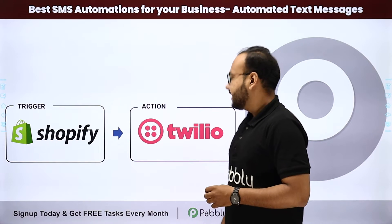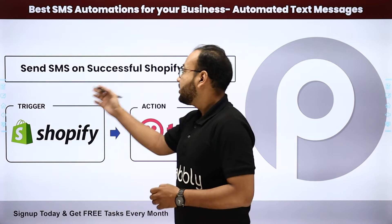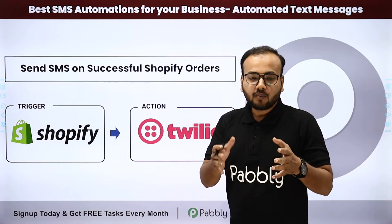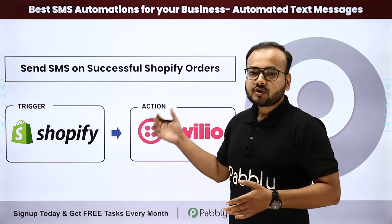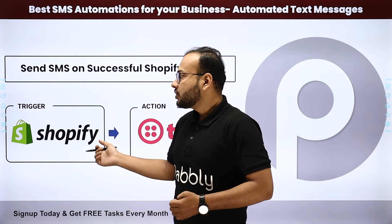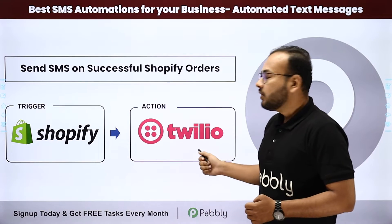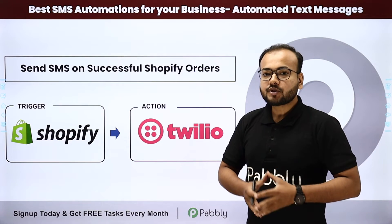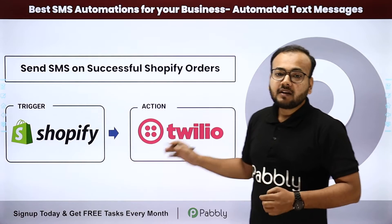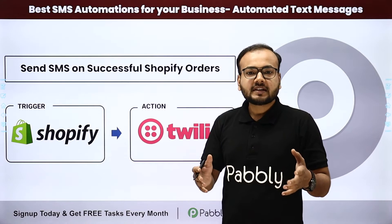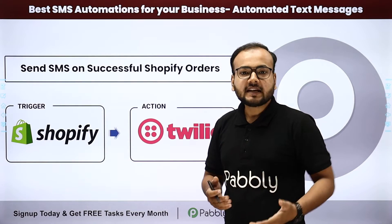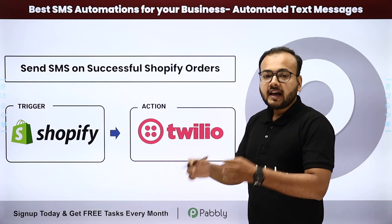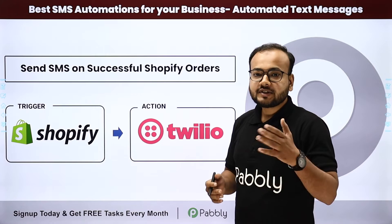The next automation is sending an SMS on a successful Shopify order. We have created this automation specially for e-commerce store owners. If you have a store created using Shopify, you can connect Shopify as the trigger application and Twilio as the action application. Whenever you get a new order on your e-commerce store, an SMS will be delivered to your customer — a confirmation message or any kind of transactional message — saving your time and sending order notifications instantly.